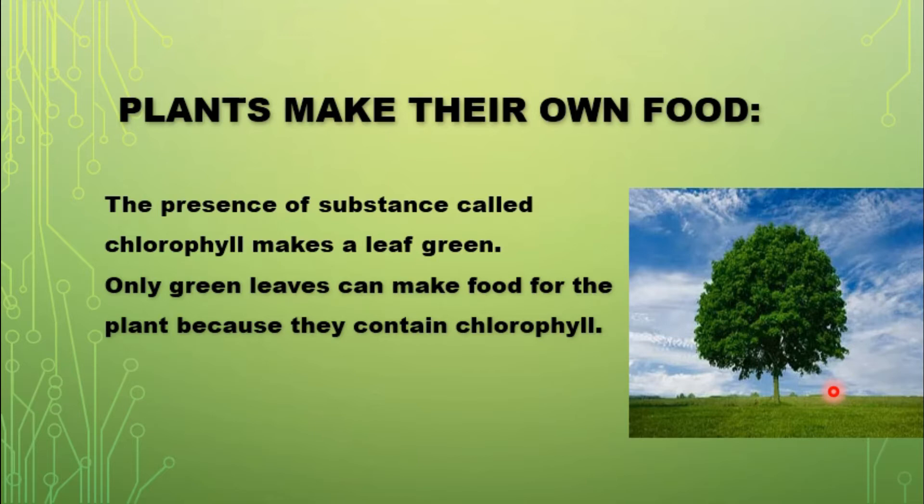For food preparation, plants need air, water and sunlight. In these three things, the green color substance chlorophyll helps the plant prepare food.